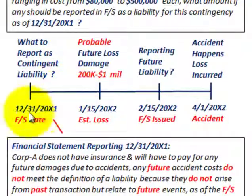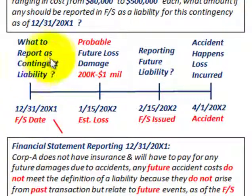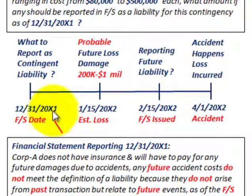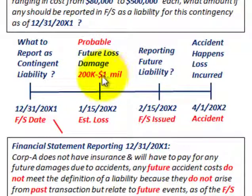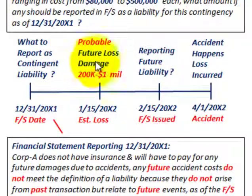Looking at our timeline: we're issuing financial statements for 20X1 at year-end, 12-31-20X1. We won't actually issue those financial statements until 2-15-20X2. Management gets together on January 15th, 20X2, and determines it's very probable they'll have future losses based on past experience, with damages ranging from $200,000 to $1,000,000. These probable losses are due to fires, explosions, and harm to people and property. The question is whether these probable 20X2 damages should be reported as a contingent liability on the 20X1 balance sheet.